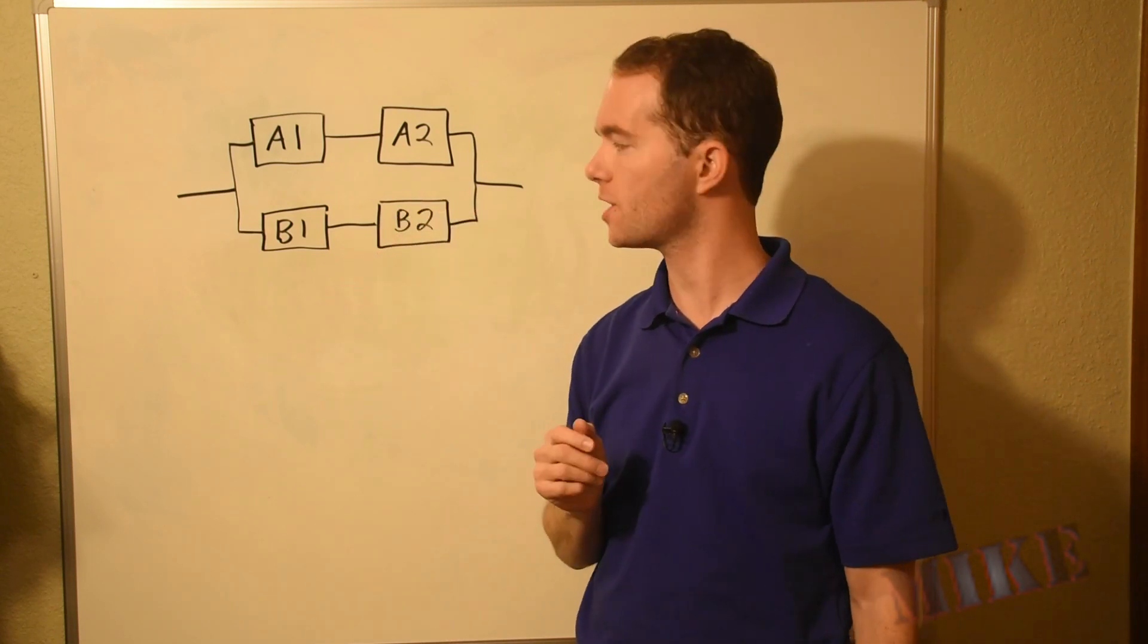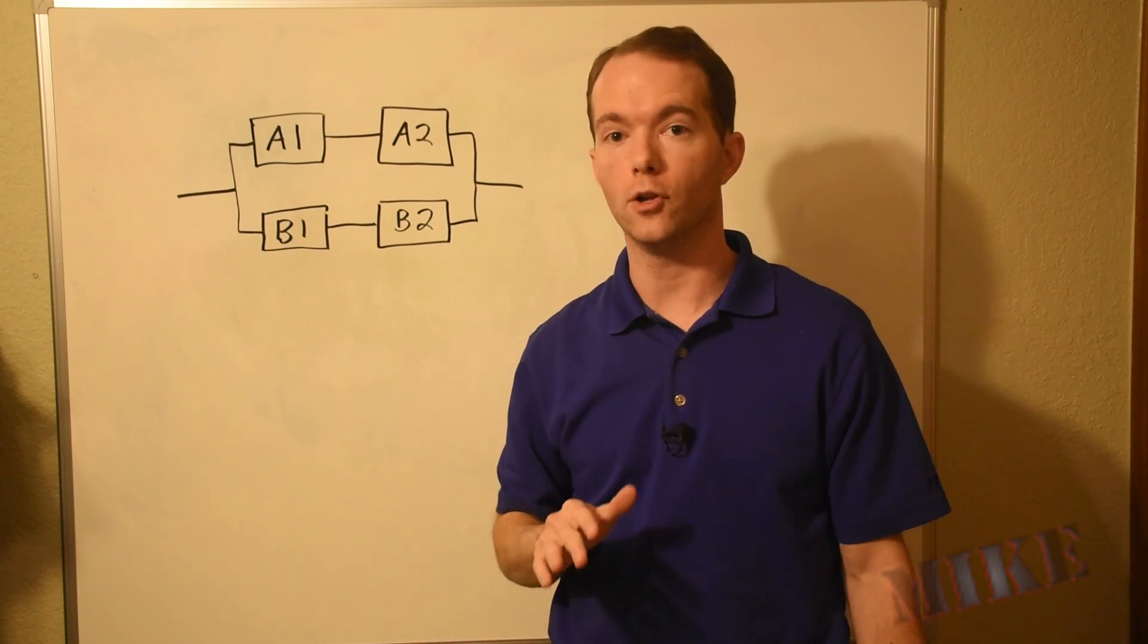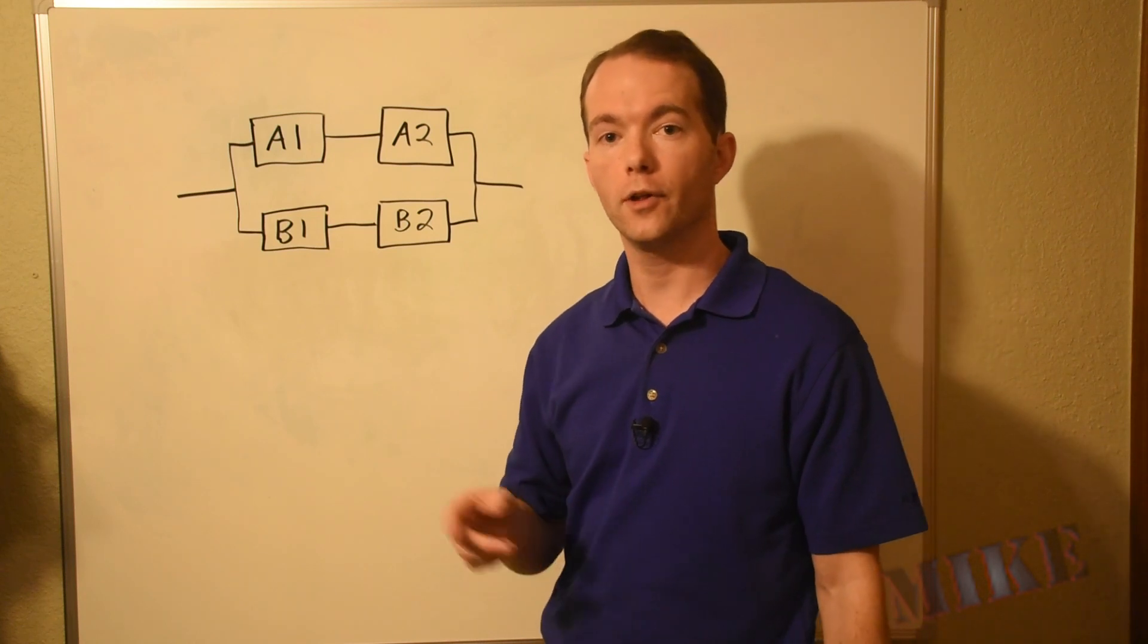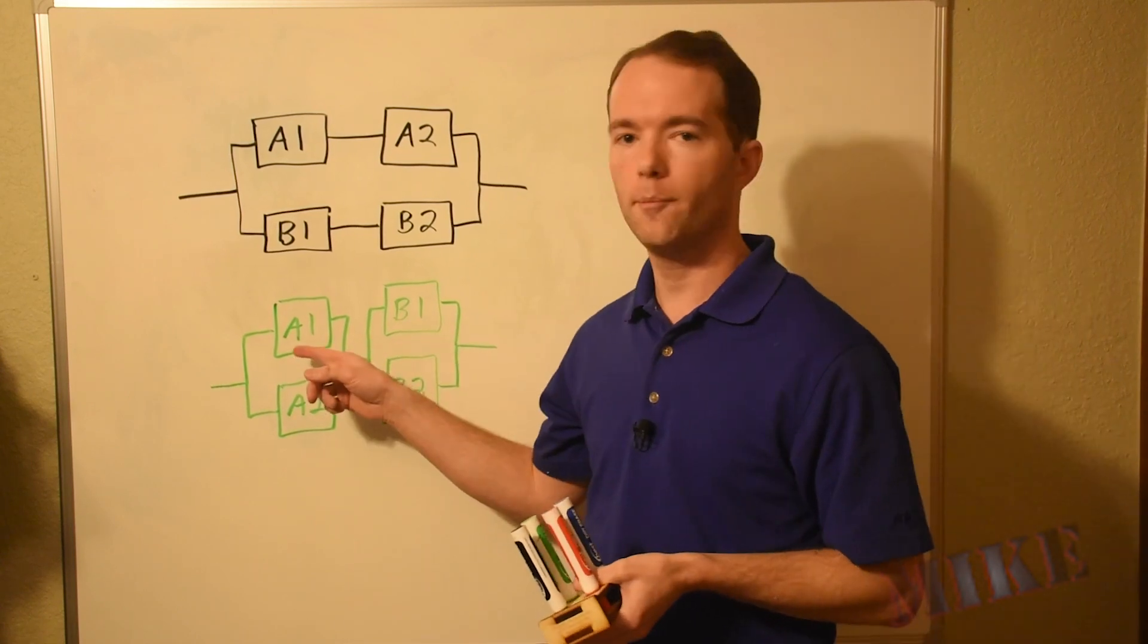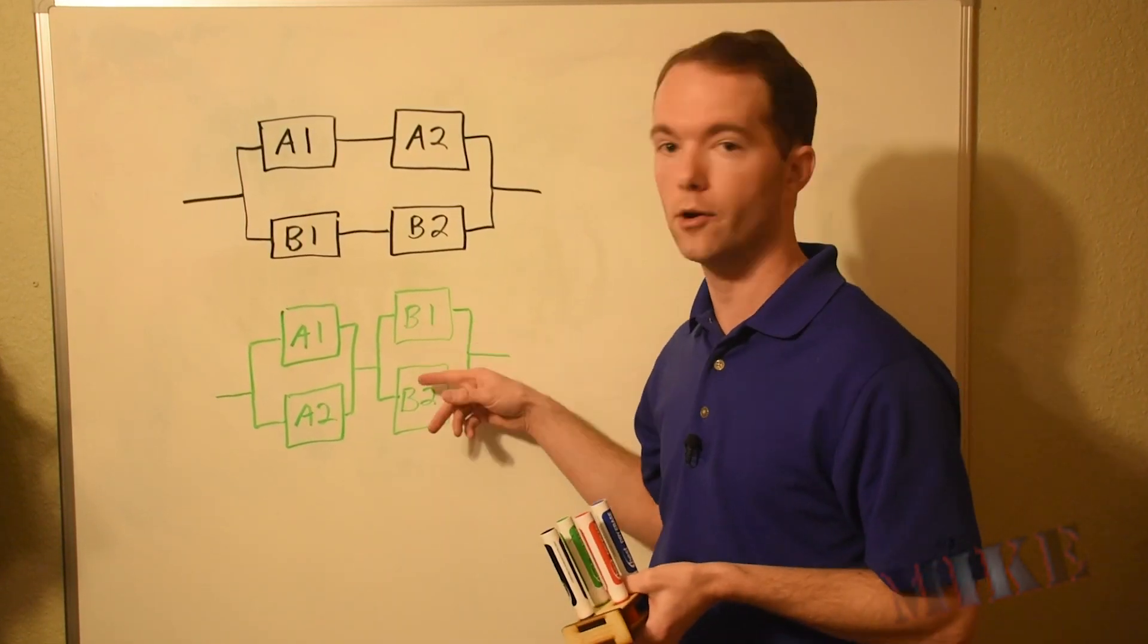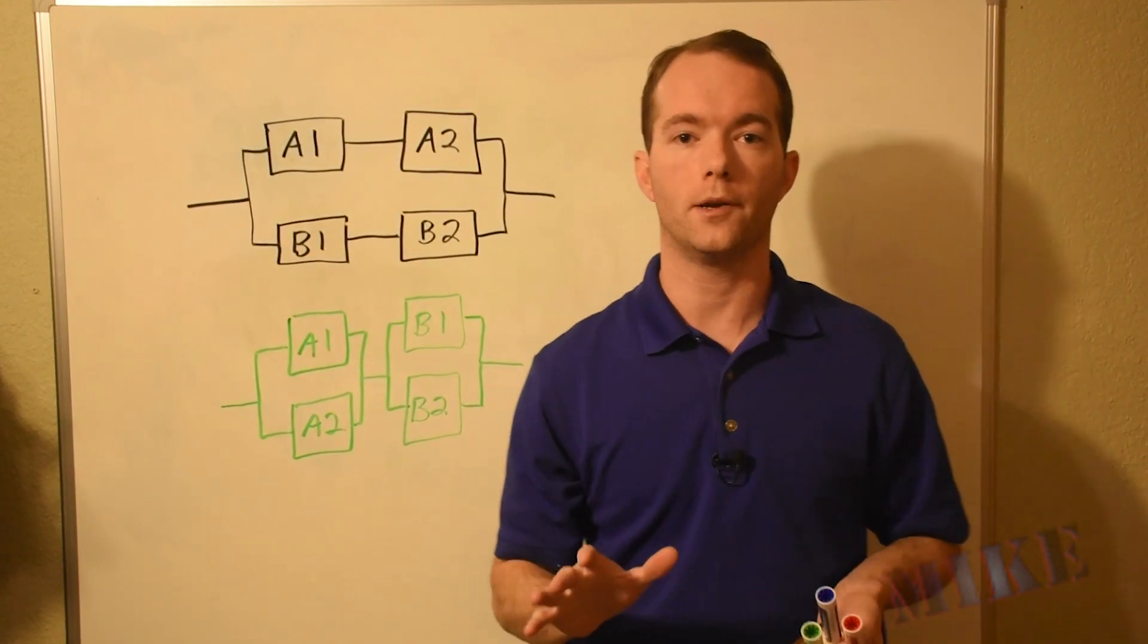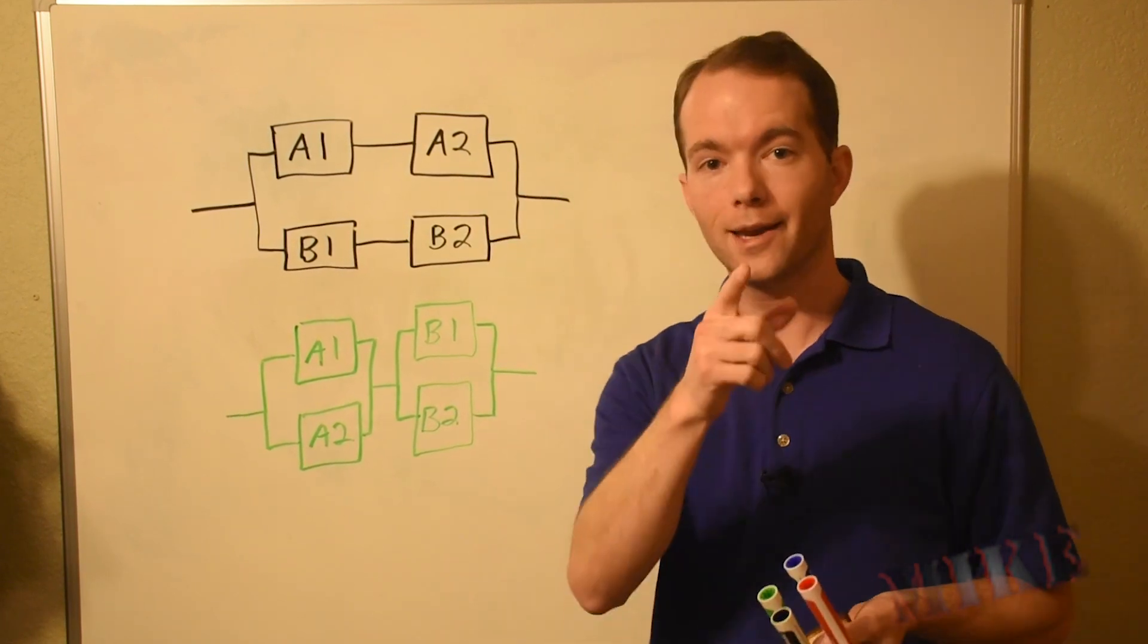But you know what? Just like in golf, low is the way to go. Low level or component level redundancy is actually better. So, let's draw one of those systems and show why. Here, I have components A1 and A2 in parallel. Then, they are in series with parallel components B1 and B2. This is component level redundancy. And if you can afford it, it's better than high level redundancy. And here's why.